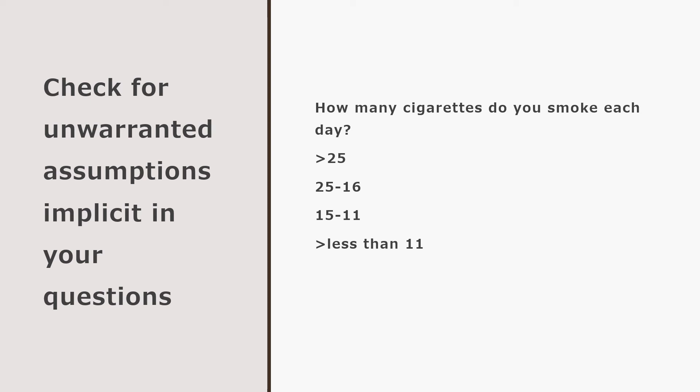Tip number six: check for unwarranted assumptions implicit in your questions. Here is an example: if you ask a respondent 'how many cigarettes do you smoke each day?' with choices given below, it seems like a clear and unambiguous question. However, one assumption you are making is that the person is likely to be a smoker rather than a non-smoker, which isn't necessarily the case. A second assumption is that a person smokes the same number of cigarettes each day.